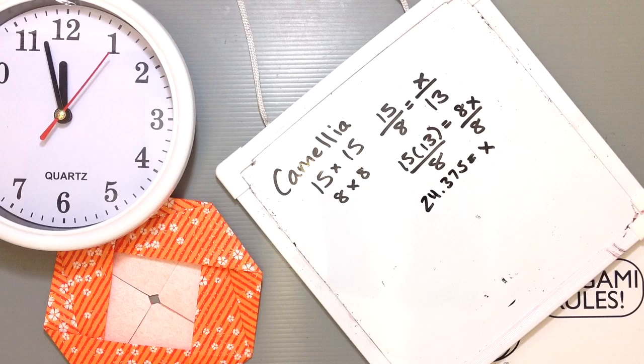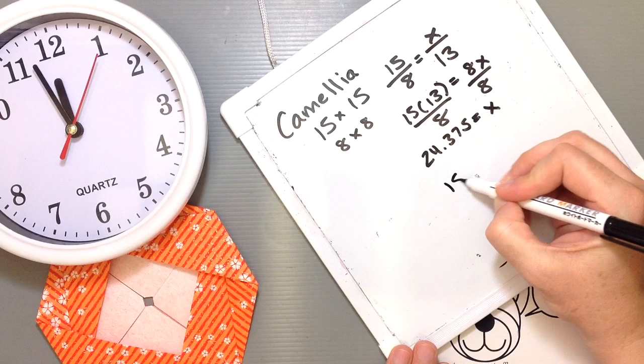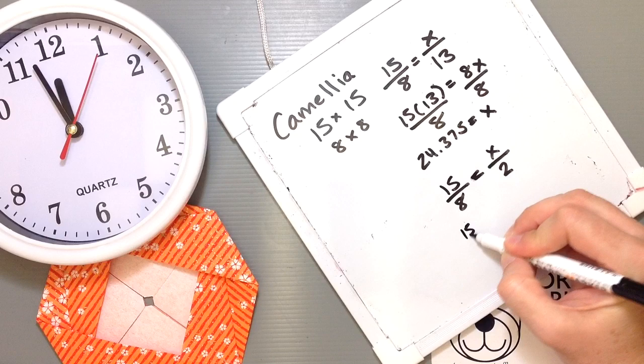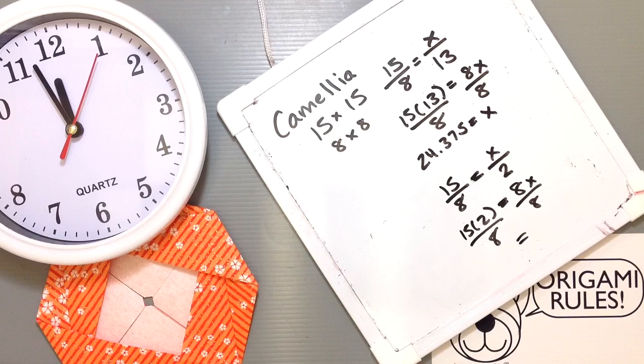I know it can be kind of off-putting to have to do math, but it can be really helpful. If you want to use the camellia for just the 12, 3, 6, and 9 section and you want it to be 2 centimeters big, you can do the exact same thing. You can say 15 over 8 equals x over 2. 15 times 2 equals 8x, then divide both sides by 8. In this case, it's 3.75.